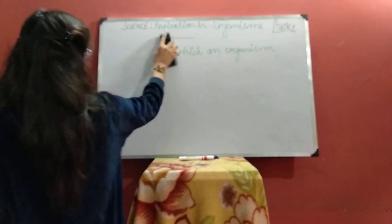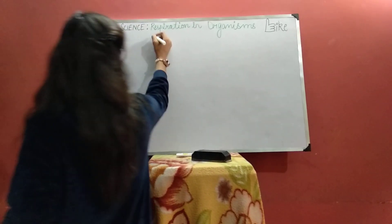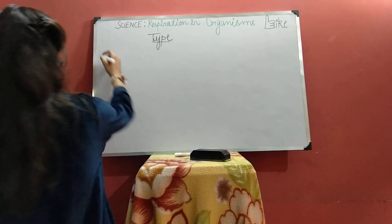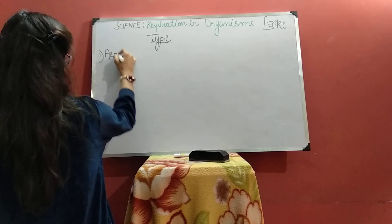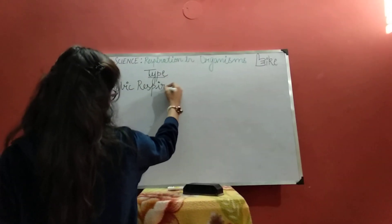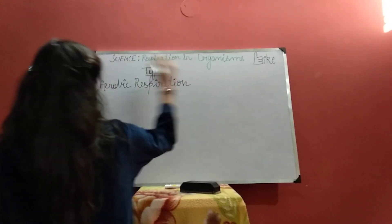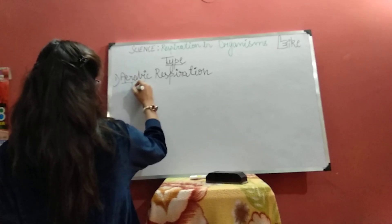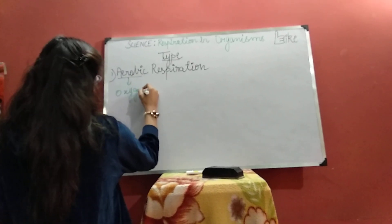Now let's learn about the types of respiration. Respiration has two types. The first type is aerobic respiration. Aerobic is something that takes place in the presence of air, but here we specifically conclude about oxygen. So aerobic respiration takes place in the presence of oxygen.